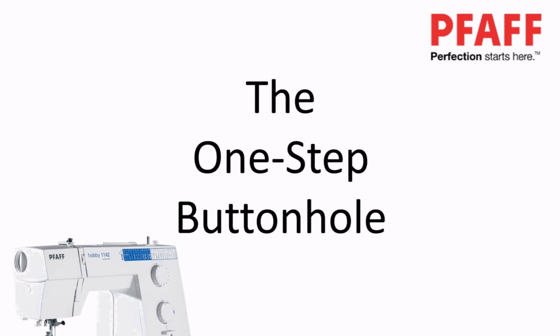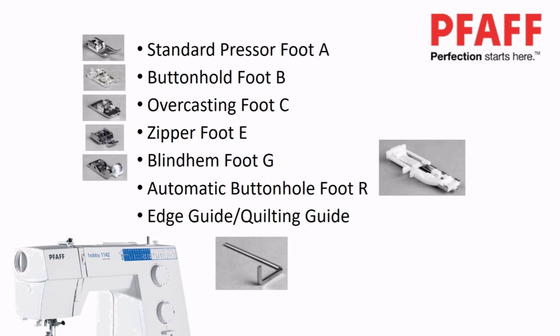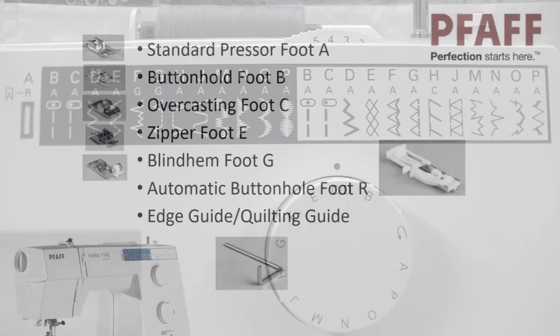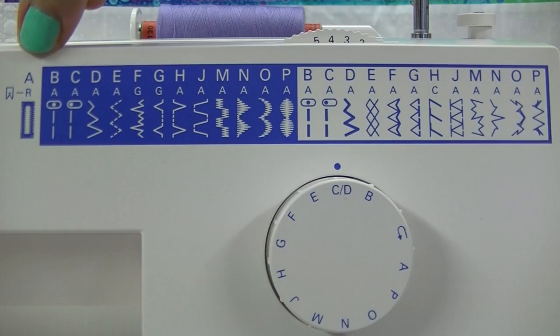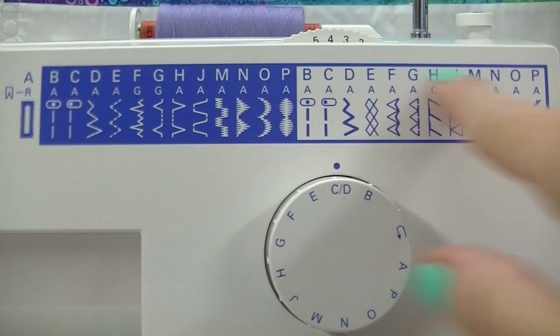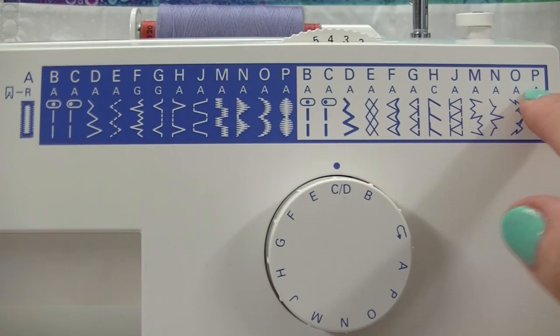Your machine comes with a selection of feet. All of the feet required to do the standard stitches on the machine are included. They're now getting ready to attach the automatic buttonhole foot. To know which foot to use for which stitch, the stitch menu along the top will tell us that information. So the first row of letters indicates the stitch selector dial. The second row indicates the foot that's required to complete that particular stitch.